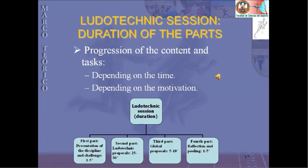The duration of the ludotechnic session is as follows. The first part, presentation of the discipline and challenge, lasts between 1 and 5 minutes. The second part, ludotechnic proposals, is about 25 to 30 minutes. The third part, global proposals, is between 5 and 10 minutes. And finally, the fourth part, reflection and pooling, like the first, is between 1 and 5 minutes.